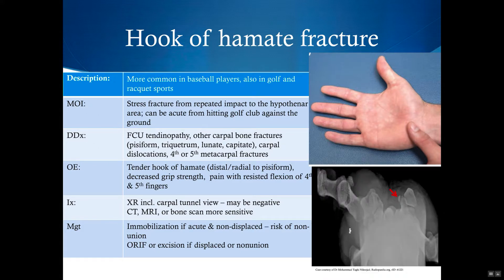Start with an x-ray of this area, including a carpal tunnel view. If the x-rays are negative, a CT, MRI, or bone scan is more sensitive. Non-displaced fractures can be immobilized, but if there's any displacement or non-union, then they should be referred to a surgeon for either open reduction internal fixation or excision.